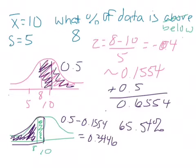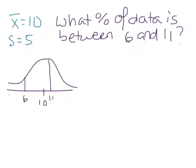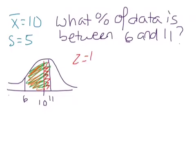For the last example, we're finding the percentage of data between two values. Considering our bell curve with mean 10, we're asked for the percentage of data between 6 and 11. We treat this as two separate parts — the area between the mean and 11, and the area between the mean and 6 — then add them together. Starting with 11: the z-score is 0.2.